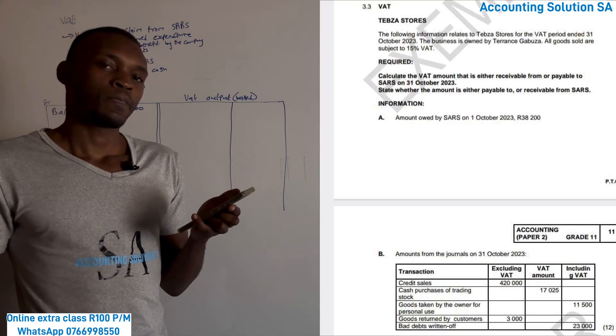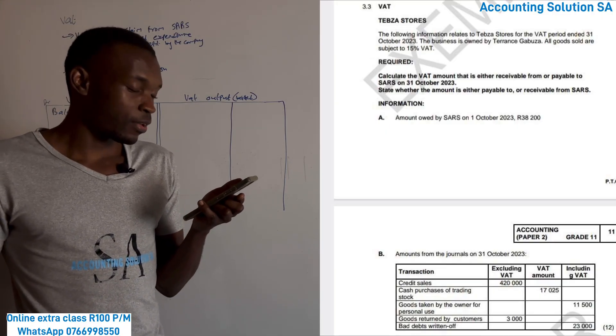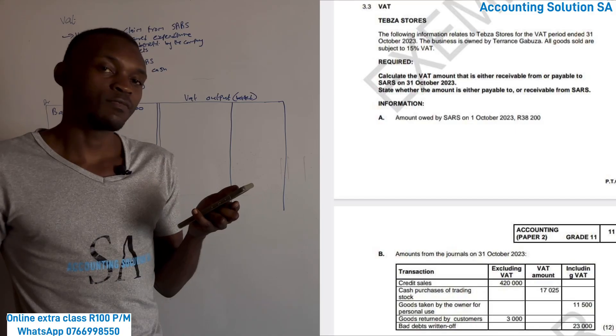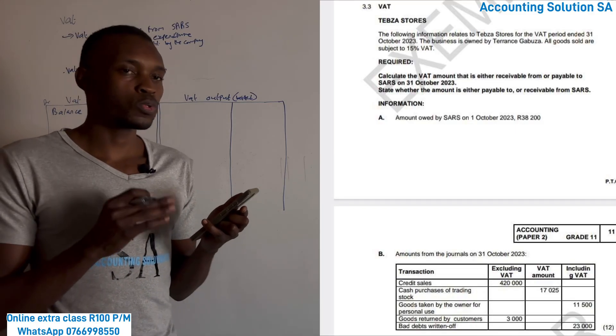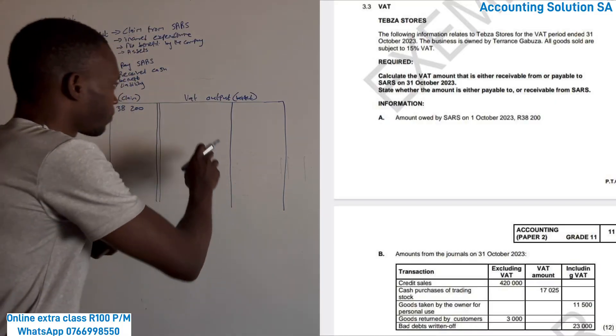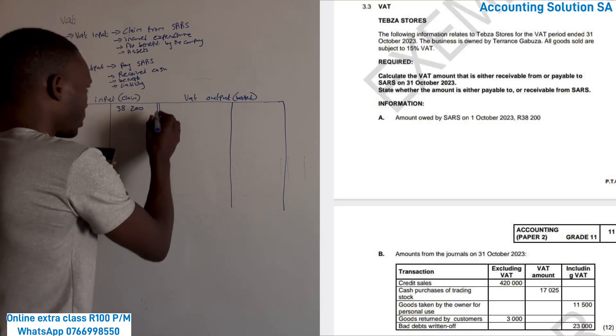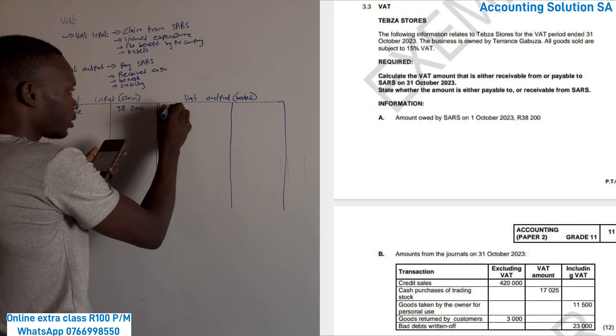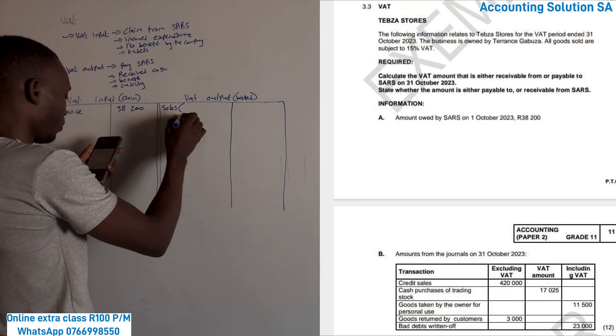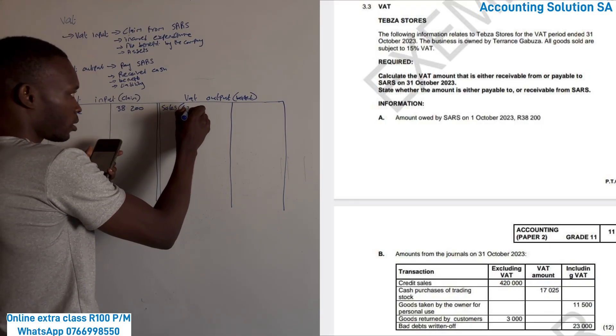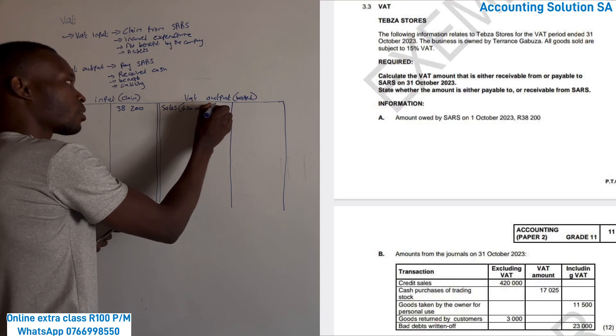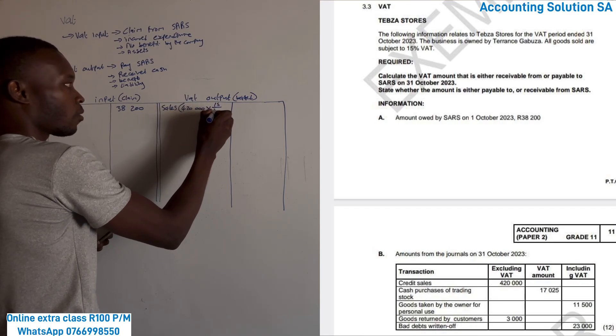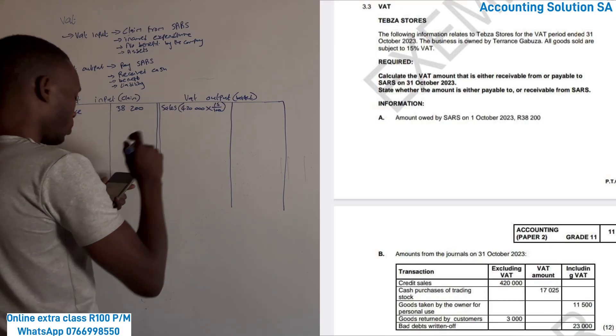Credit sales. We have exclusive amount, they didn't give us VAT, we must calculate. We sold goods to customer, we benefit, which means it must come this side. Sales. We have to calculate first, 420,000, because we don't have a VAT amount. Because it's exclusive, we say VAT amount times 15 over 100, and we get 63,000.